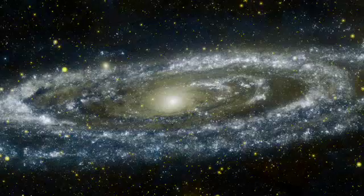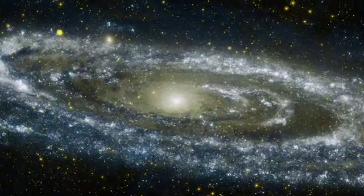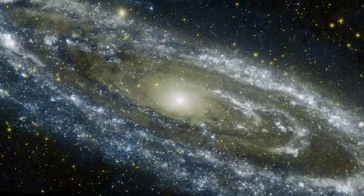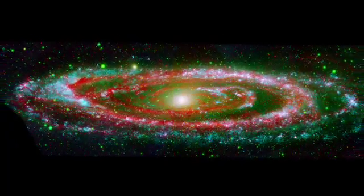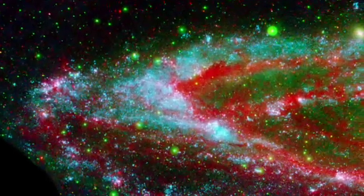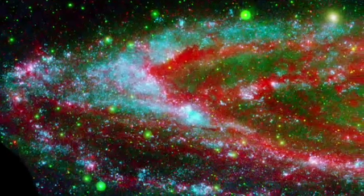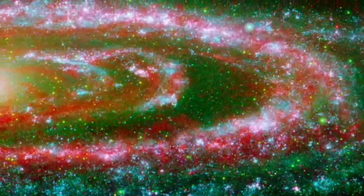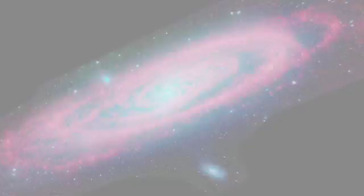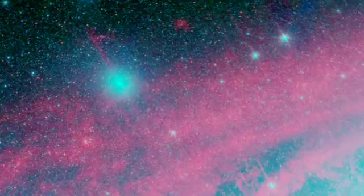Combining the infrared view of Spitzer with the ultraviolet light captured by NASA's Galaxy Evolution Explorer offers yet another perspective. The disrupted ring and irregular splashes of the hottest young stars highlight the ongoing disruption in Andromeda.